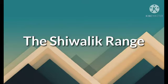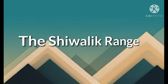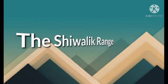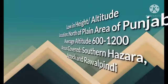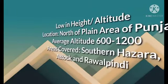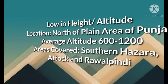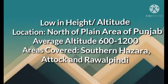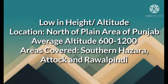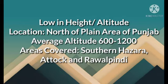The Shivalik Range lies at the junction of the upper course and the middle course of the river, where the upper course mainly has mountains. So the Shivalik Range lies at the junction of the plain area and the mountainous areas — they are low altitude mountains lying in the north of the plain areas of Punjab. Their average altitude is 600 to 1,200 meters. The areas covered include the south of Hazara Division, Attock, and some parts of Rawalpindi that are excluded in the plateaus.